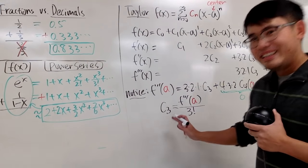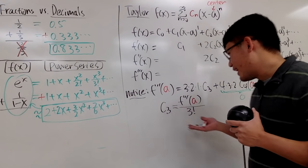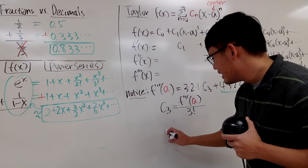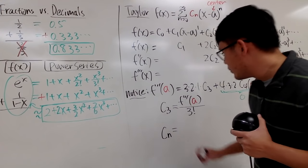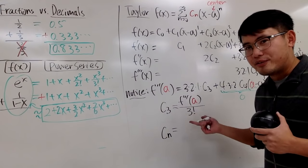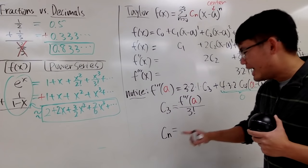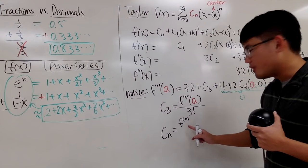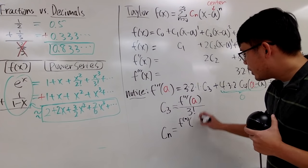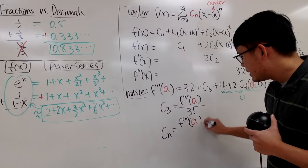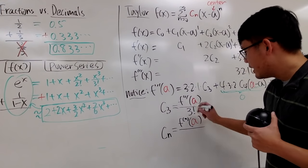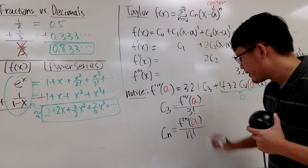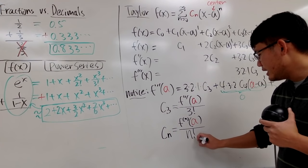Well, well, in fact, we can generalize this. The idea is that cn is equal to, you just have to differentiate n times. And in notation, we'll write it as f with the parentheses n. This means the nth derivative of the function. And then you are going to put a into it, and then you are going to divide it by n factorial. Right? That's it. Right?